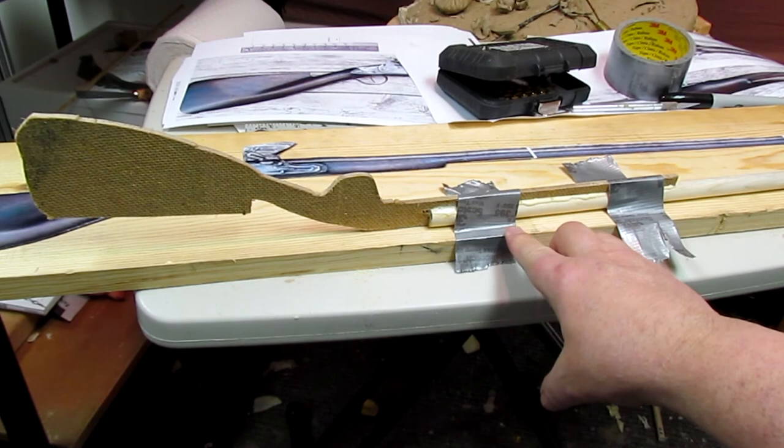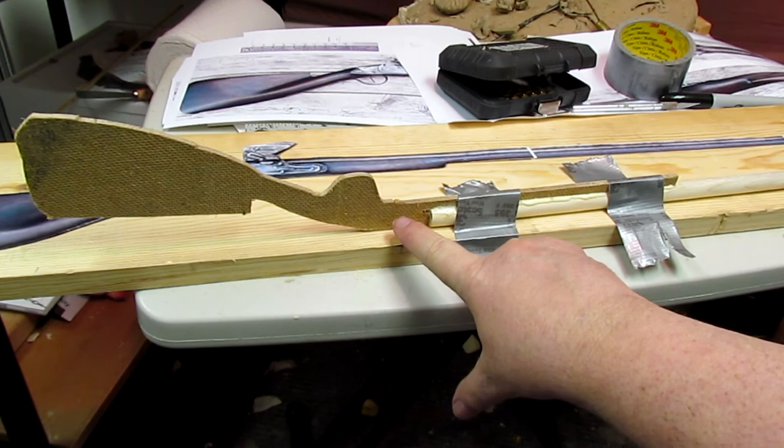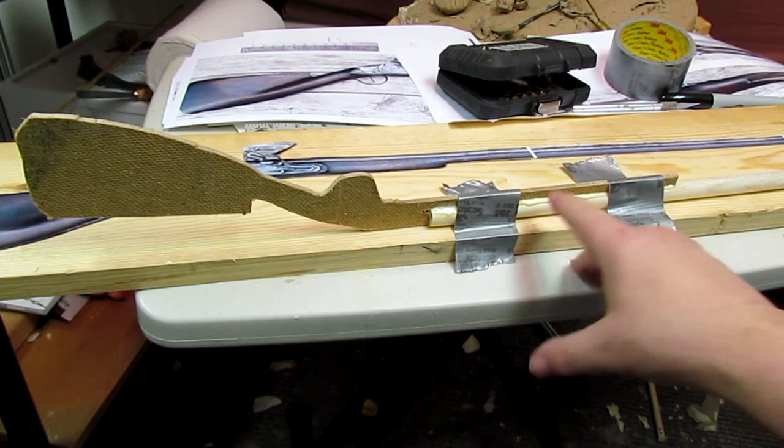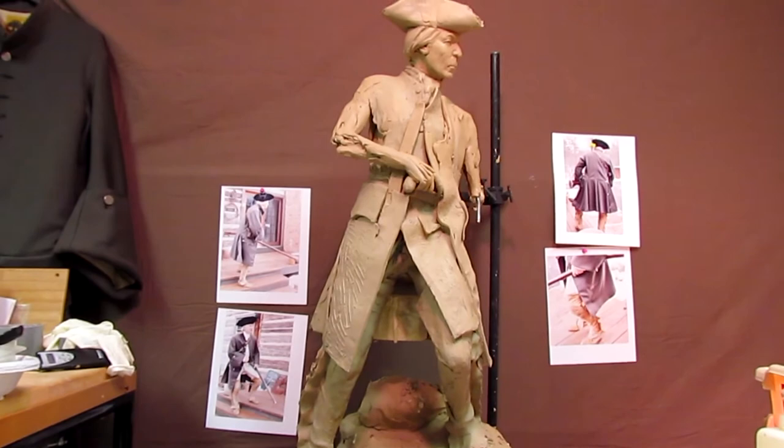As you can see, I've got the thing taped down with duct tape, and the support for the barrel on the butt held down as well. That's just to hold it in place so that it will harden up and set up overnight. But that's the beginnings of my club butt fowler that I'm making for my sculpture of Captain John Lovewell.